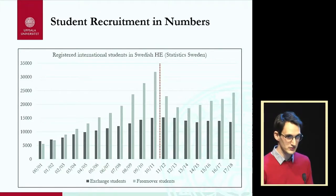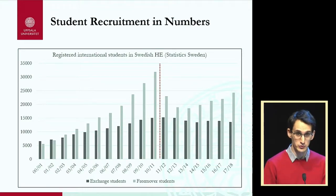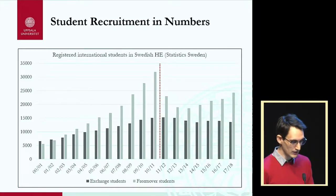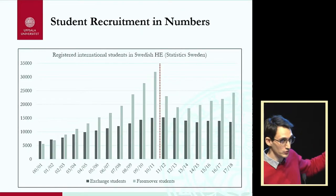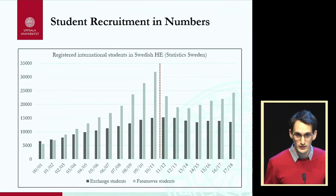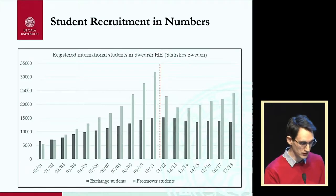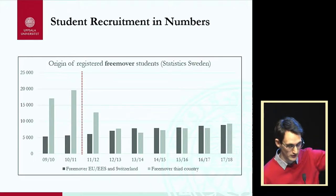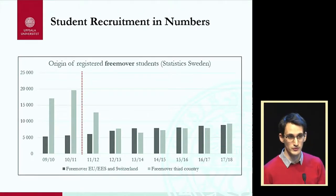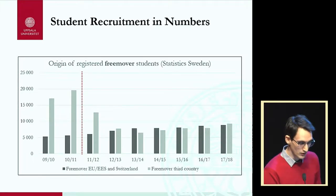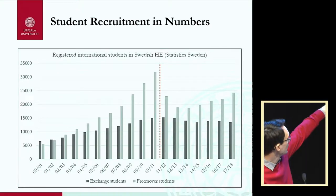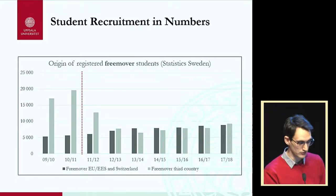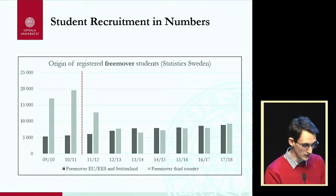There was a very fast increase in student numbers in the beginning of the period, especially among free mover — meaning degree-seeking — students. With the introduction of tuition fees, if we look at only free mover students from third countries, the number of new students dropped by 80% from one year to the next in the group targeted by fees. Numbers have slowly increased since, though some of the recovery is due to an increase of EU/EEA free movers.